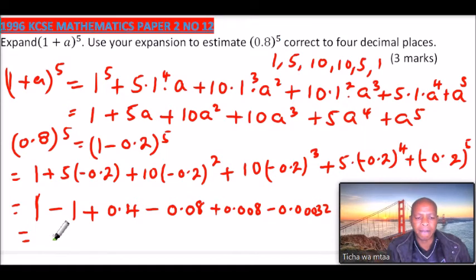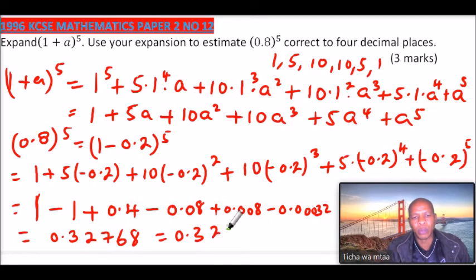0.32768. And to 4 decimal places, we have 1, 2, 3, 4 decimals, equals 0.3277, because this 8 is more than 5. And this is to 4 decimal places.